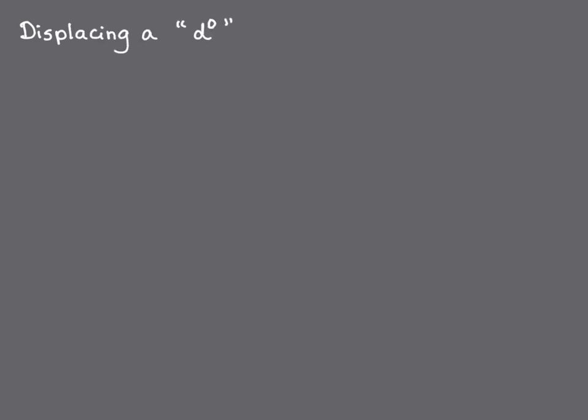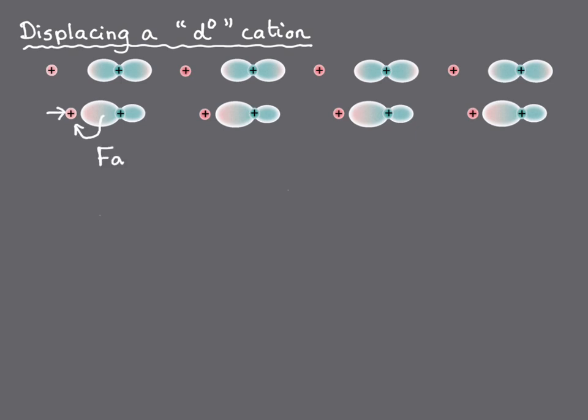In fact, we already had a hint of this in the previous module on the Born effective charge, where we argued that it's energetically favorable for a cation to move towards a neighboring anion if it can form a chemical bond through partial sharing of the anion's electrons onto the cation. And this can occur most readily if the cation valence orbitals are empty, that is, in a d0 configuration.